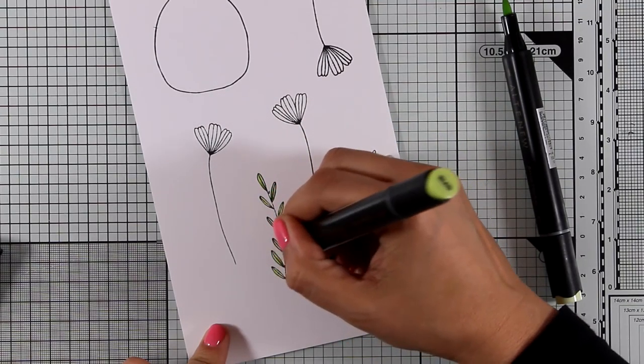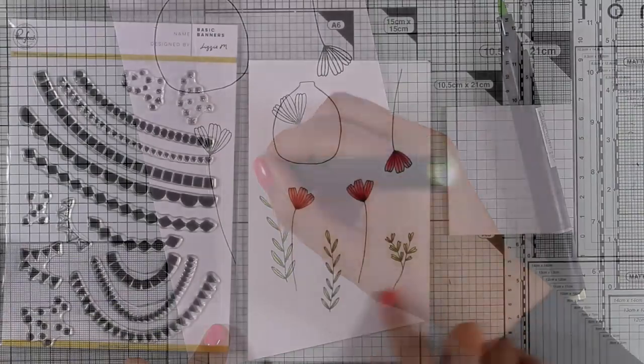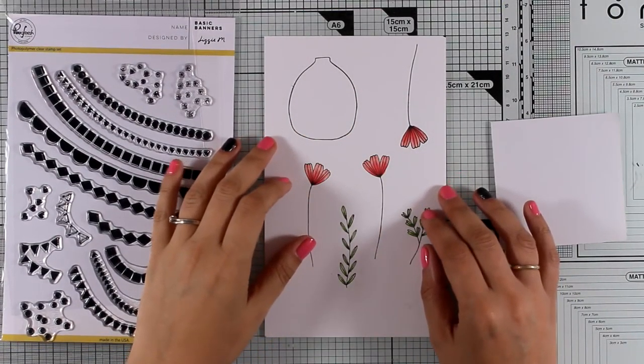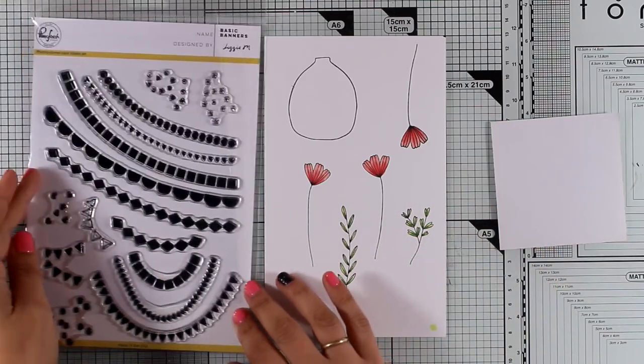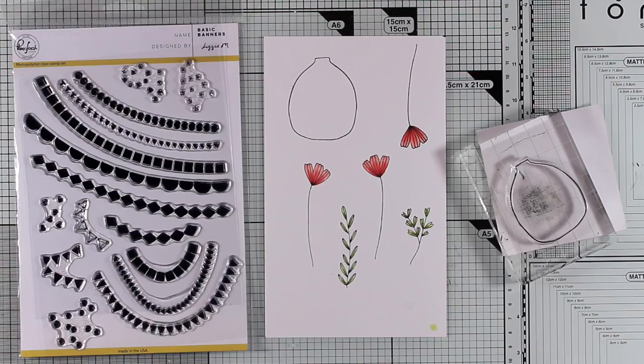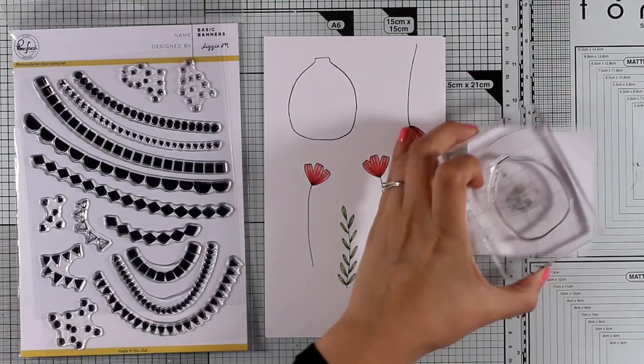After coloring my images, I decided that I wanted to add some patterns on the vase so it doesn't look as plain. A great way to add patterns is to use this stamp set called Basic Banners.